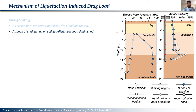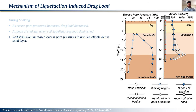At the peak of shaking, the loose sand layer liquefies and in the liquefied soil the negative skin friction becomes almost zero, seen from the constant axial load profile. Correspondingly, the tip load also decreases. We also observe that redistribution of excess pore pressures from the liquefied soil to the non-liquefiable layer results in very large excess pore pressure developments. This is important because we often assume the non-liquefiable layer will have very small excess pore pressures, but this redistribution can generate very large excess pore pressures that reduce the tip capacity of the pile and cause large settlements, which we'll see later in the presentation.